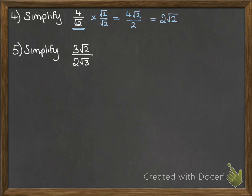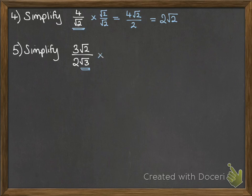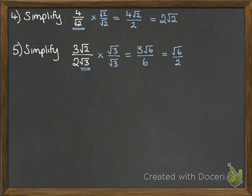Next one is to simplify this one. We don't have to multiply by the whole of that 2 root 3 on the bottom — we can just multiply by the root 3, because that's the only part we need to get rid of. So multiplying that through on the top, we get 3 root 6, combining that root 2 and the root 3 into a root 6. And on the bottom, root 3 times root 3 is 3, times by the 2 is 6. Simplify that and we end up with root 6 over 2.